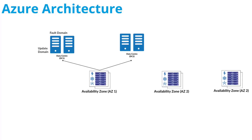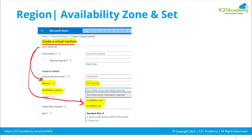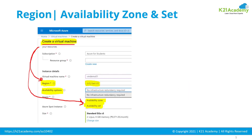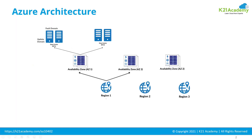Multiple data centers make an availability zone, and within a region you can have up to three availability zones. When you select machines to be across availability zones, Microsoft will place them in different availability zones, which means different data centers. One thing to understand is that not every Azure region has multiple availability zones. So if a region has only a single availability zone, you will not get that option. In this case, US East has multiple availability zones, and that's why we're getting the option of availability zone.